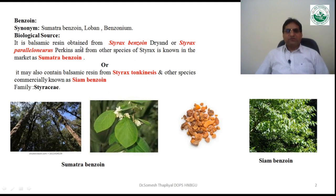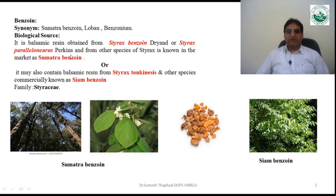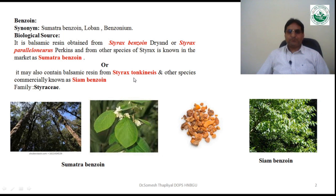The first drug is benzoin, commonly known as benzoin, Sumatra benzoin, or luban. It is a balsamic resin obtained from Styrax benzoin Dryander or Styrax paralleloneurum Perkins — both commonly known as Sumatra benzoin. Another species is Styrax tonkinensis, which is known as Siam benzoin.